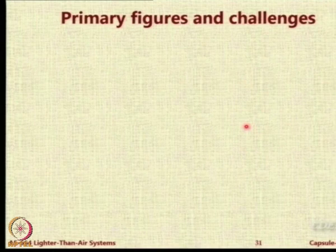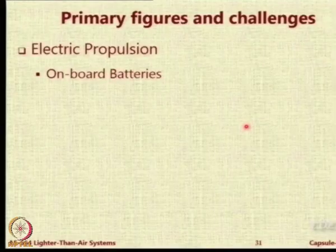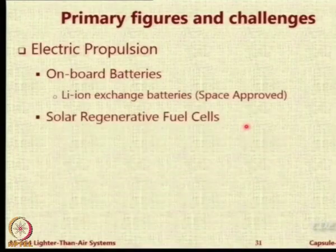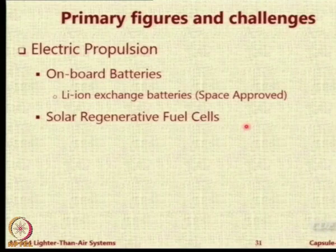For the onboard system, during the daytime we can give direct power to the propulsion system and to the payload system. But at night, we do not have any power source. So we have to store power during the daytime so that it can serve the power requirement for the payload as well as the propulsion system at night. We will need storing systems — onboard batteries and solar regenerative fuel cells.